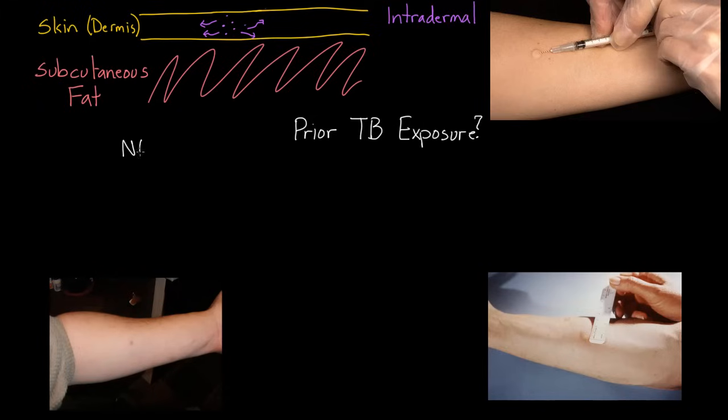Let's think about what would happen in either scenario. So this would be that they have not had prior TB exposure, and on this side let's talk about what would happen if they have had prior TB exposure. Two scenarios, let's start on the no side, so let's draw our skin again, so this is just as before, let's draw some TB protein in here.